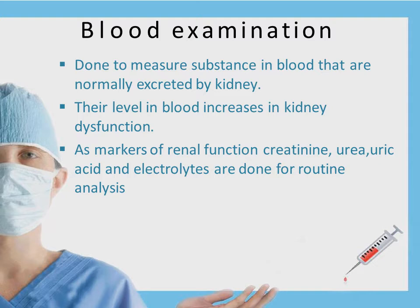The other test that can be performed in the renal function test is blood examination, done to measure substances in blood that are normally excreted by the kidney. For example, hippuric acid is a compound usually fully excreted through the urine, so any amount of its presence in the blood means there is a defect in the kidney. As markers of renal function, creatinine, uric acid, and electrolytes are also done for routine analysis.